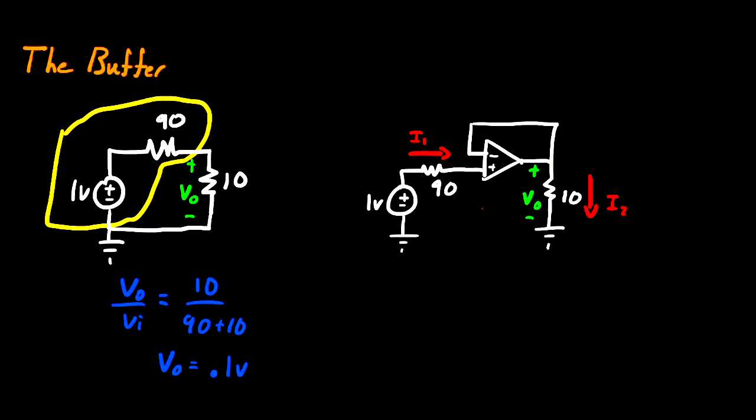So what I'm going to do next is begin labeling my nodes. So this VO over here on the right is referenced to my ground, so I know this node is VO. Because we have an op amp, we know that the negative input and the positive input have the same potential.